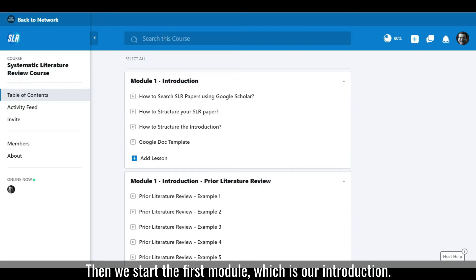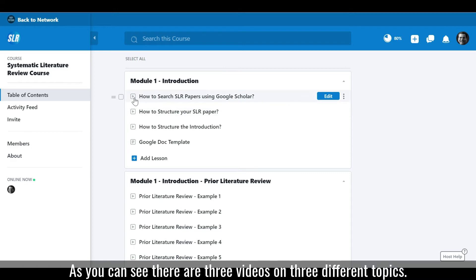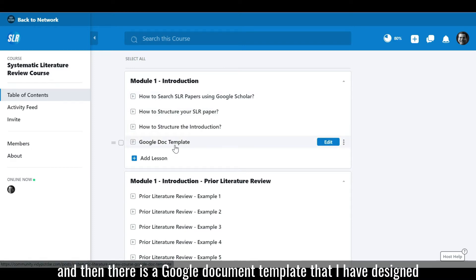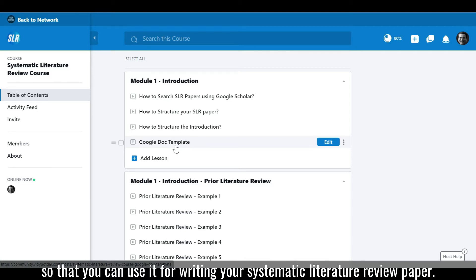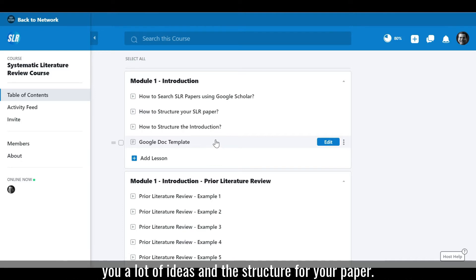Then we start the first module, which is on introduction. As you can see, there are three videos on three different topics. And then there is a Google document template that I have designed so that you can use it for writing your Systematic Literature Review paper. This is a very useful document because it gives you a lot of ideas and the structure for your paper.